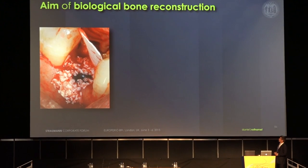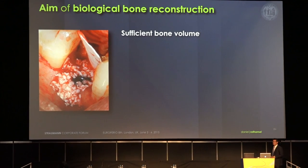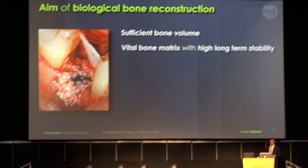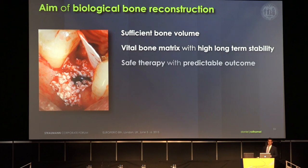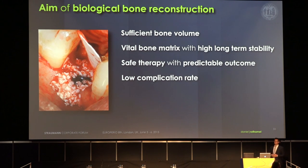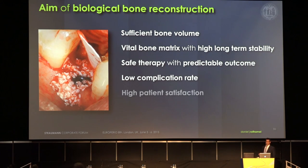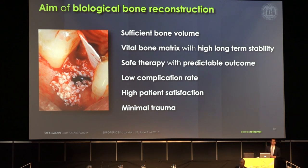When we look at the aim of biological bone reconstruction, the thing that we want to see at the end is sufficient bone volume. But this is not everything we want to reach. Another very important aspect that changed the technique from big bone blocks to the shell technique published by Currie and Kubrick is that we want to have a vital bone matrix with high long-term stability. We also want a safe therapy with predictable outcome, especially for people working in private practice — they want a low complication rate and minimal trauma for their patients.